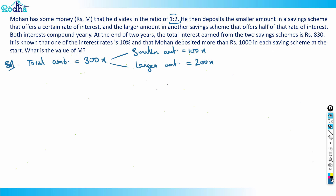I need to consider two cases here, because the problem says one rate is half the other, and one rate is 10% — but it doesn't specify which scheme has 10%. Also, Mohan deposited more than ₹1000 in each scheme. In Case 1, the smaller amount 100x gets 10% and the larger amount 200x gets 5% (half of 10%). The time period is two years.